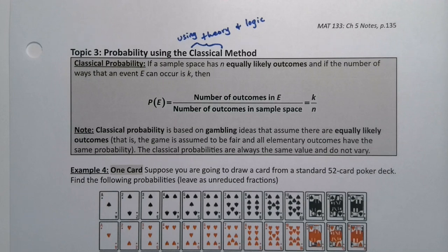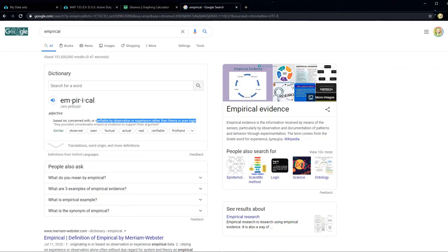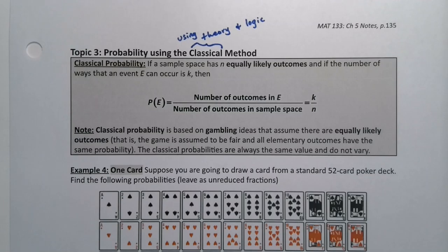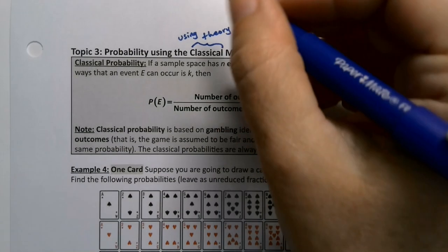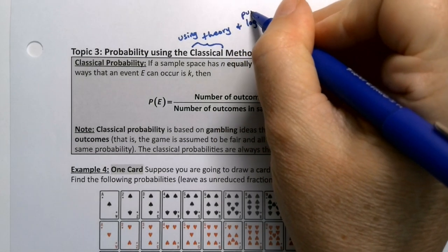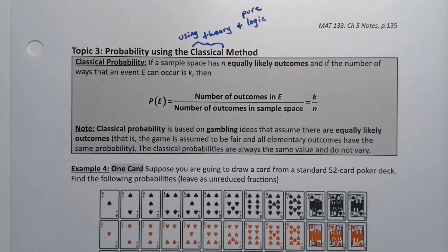The second method available to us for finding probabilities is the classical method. If you remember, when we looked at the definition of empirical, it said that empirical means it's concerned with or verifiable by observation or experience rather than theory or pure logic. So the classical method is theory and logic — theory and pure logic. You're just imagining, hypothetically speaking, the situation.